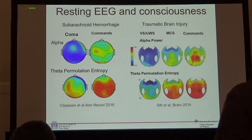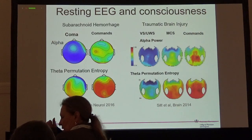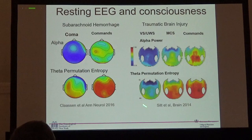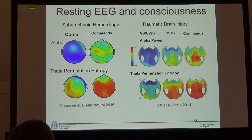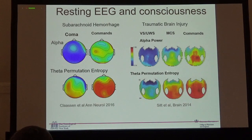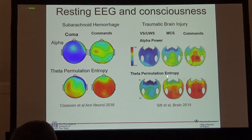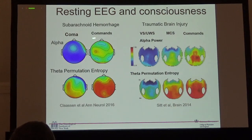There are also EEG signatures correlated with different levels of consciousness. In TBI patients, Jacobo Sitz's group with Lionel Narkash in Paris found significant changes in chronic disorders of consciousness between the minimally conscious state and the vegetative state — better called unresponsive wakefulness syndrome. Two such signatures are alpha power and theta permutation entropy, a complexity measure, which predictably change between these consciousness levels — a pattern also found in subarachnoid hemorrhage patients.